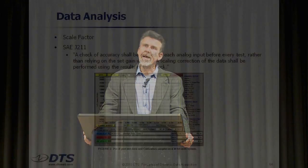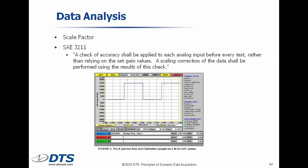On the data analysis side, that's also regulated by J211. Scale factor: a check of accuracy shall be applied to each analog input before every test rather than relying on set gain values. That's about cross-checking the work. You want a system where you've empirically validated the sensors, and then the software actually runs a cross-check to make sure you're getting what you think you're getting.